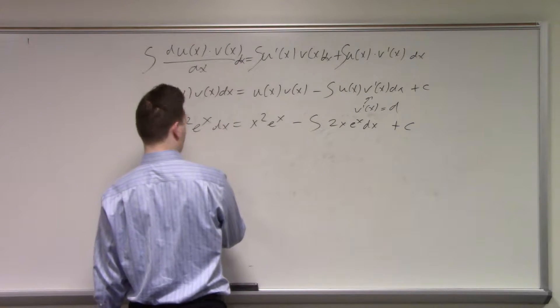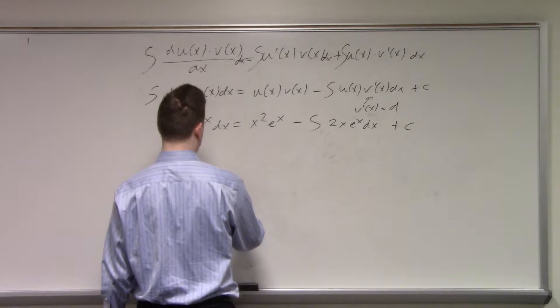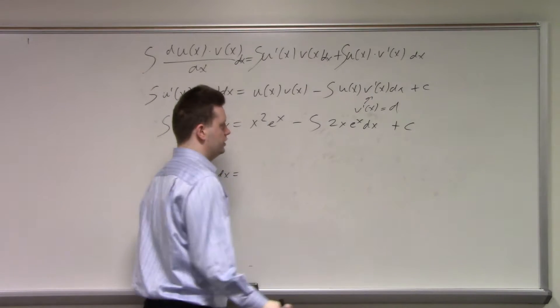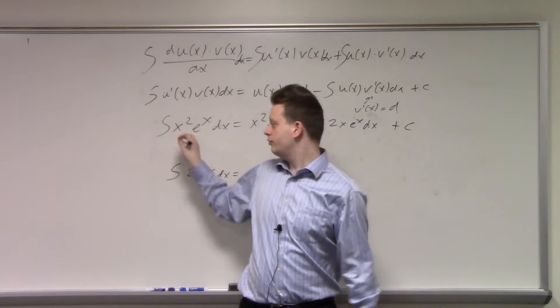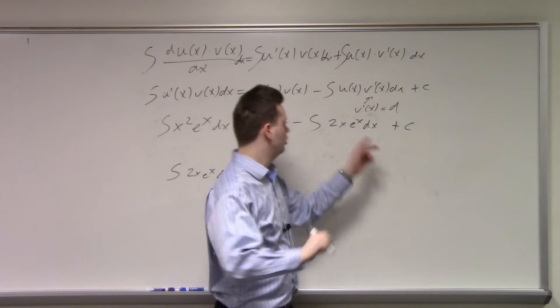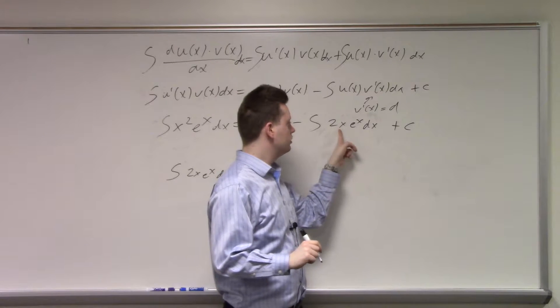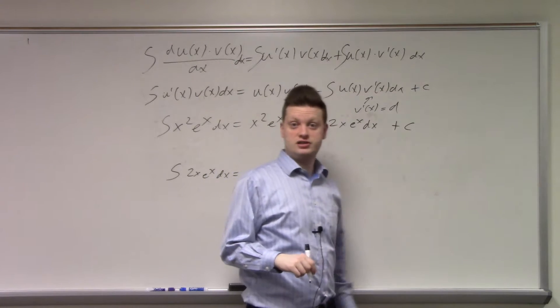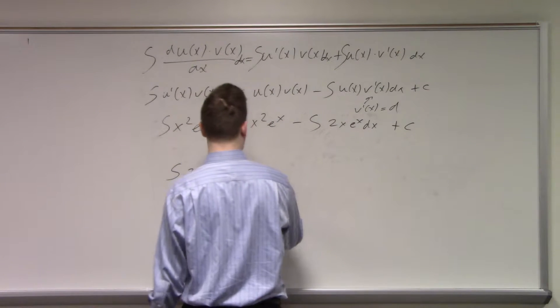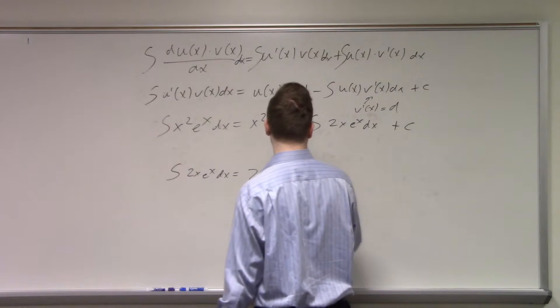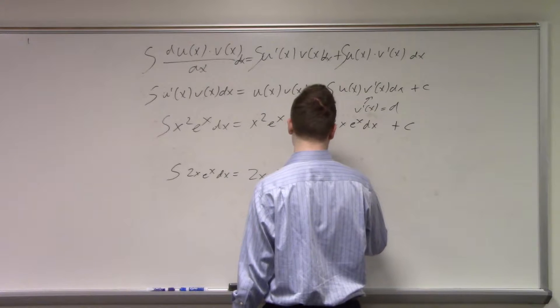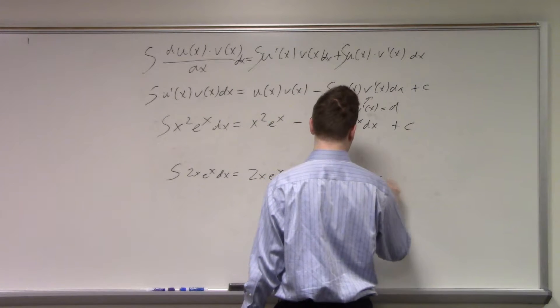So the integral of 2x e^x dx is equal to, as we've seen here when I wrote all the derivatives, we want here to have 2x be the v this time. So we get 2x e^x, differentiating e^x doesn't change, minus the integral of 2 e^x dx, plus some new constant.